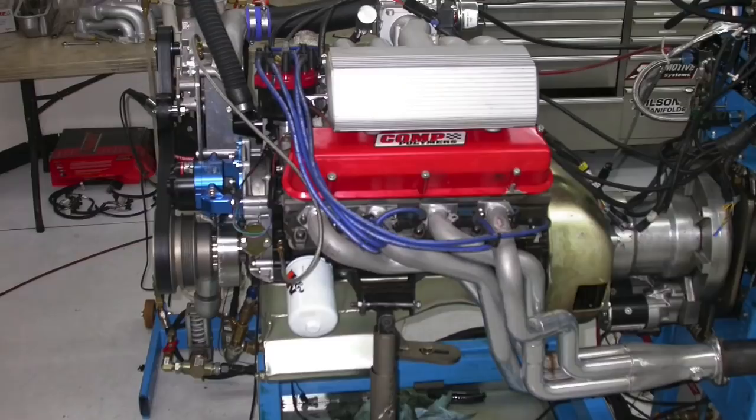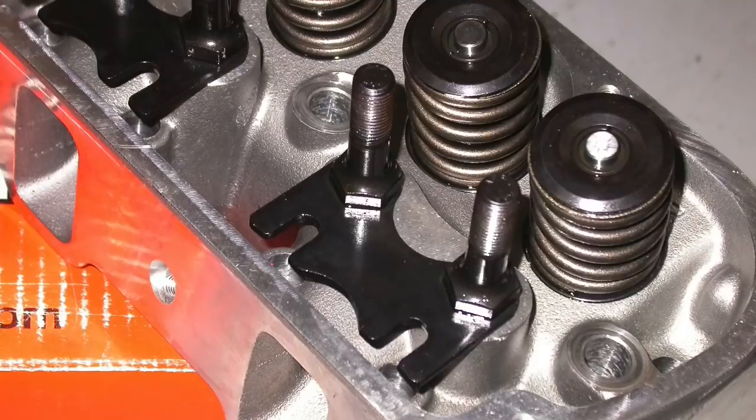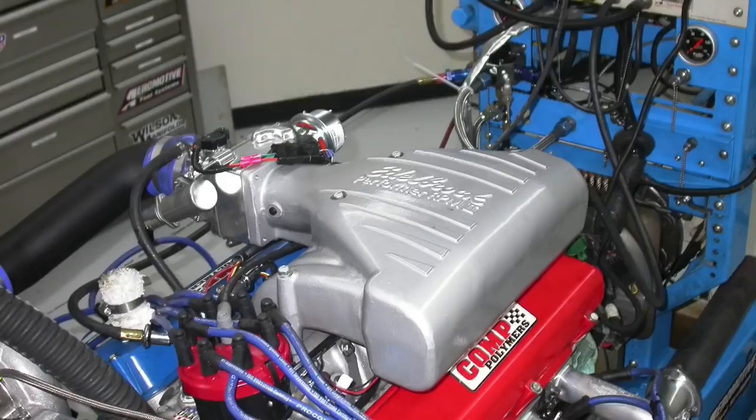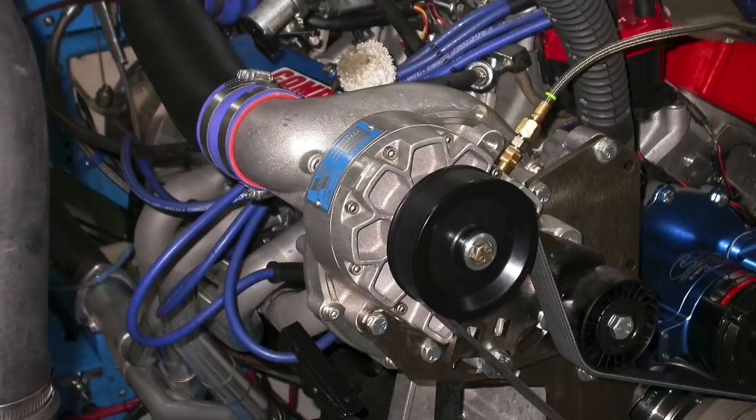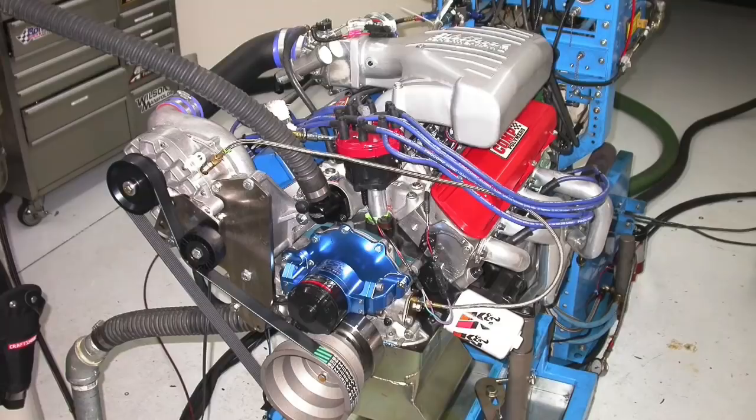Then we're going to run boost on that combination from a Vortex Supercharger. Then we're going to modify the NA configuration with heads, cam, and intake to replace the stock stuff and the GT40. Finally, we're going to add the Vortex Supercharger back to the modified configuration. So that's four configurations. Let's get going!